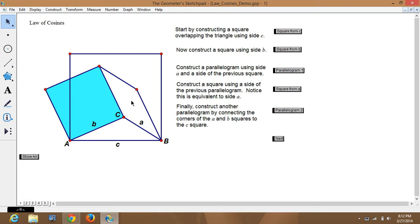Okay, it says construct a square using a side of the previous parallelogram. So, we've got the parallelogram. We want to construct a square right up here. Okay? So, the one thing you remember in the parallelogram, this side is side A.